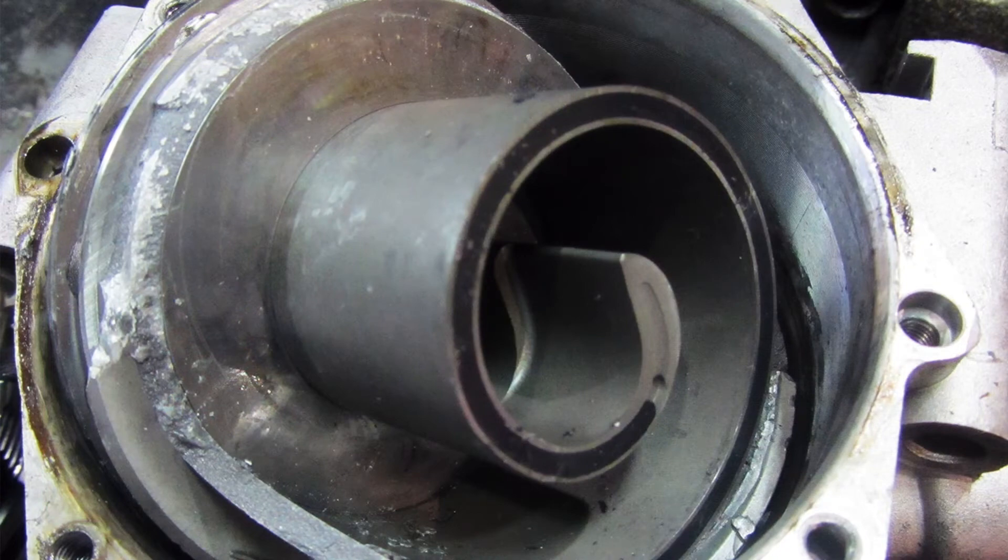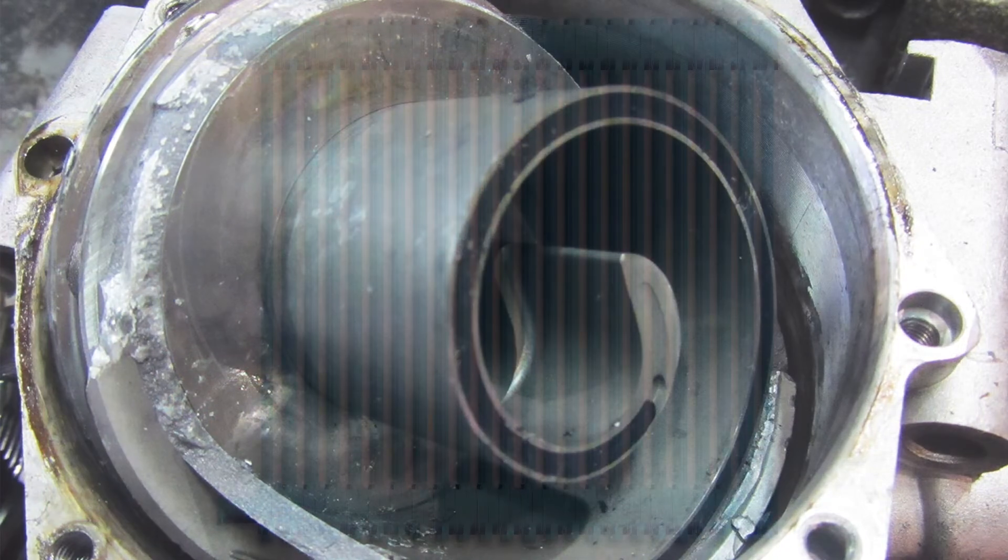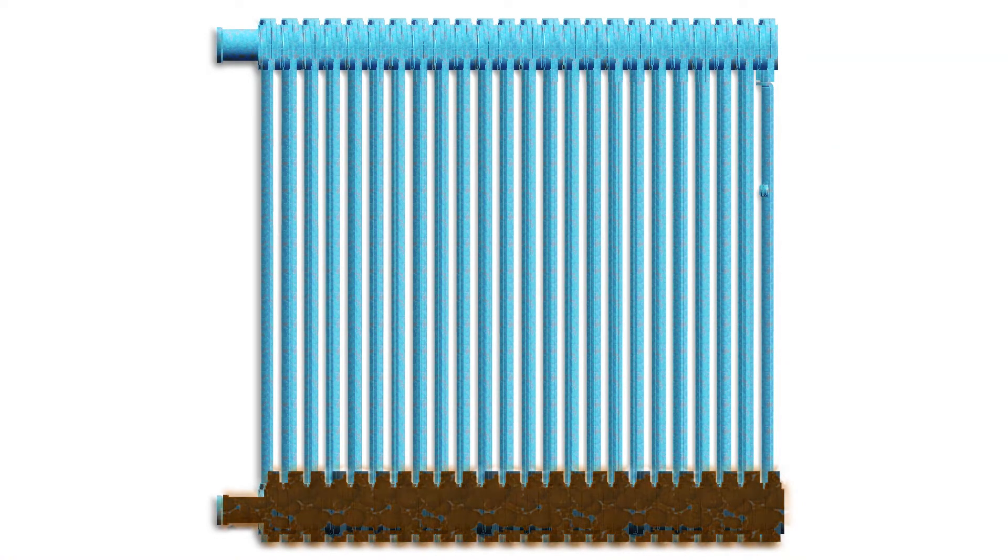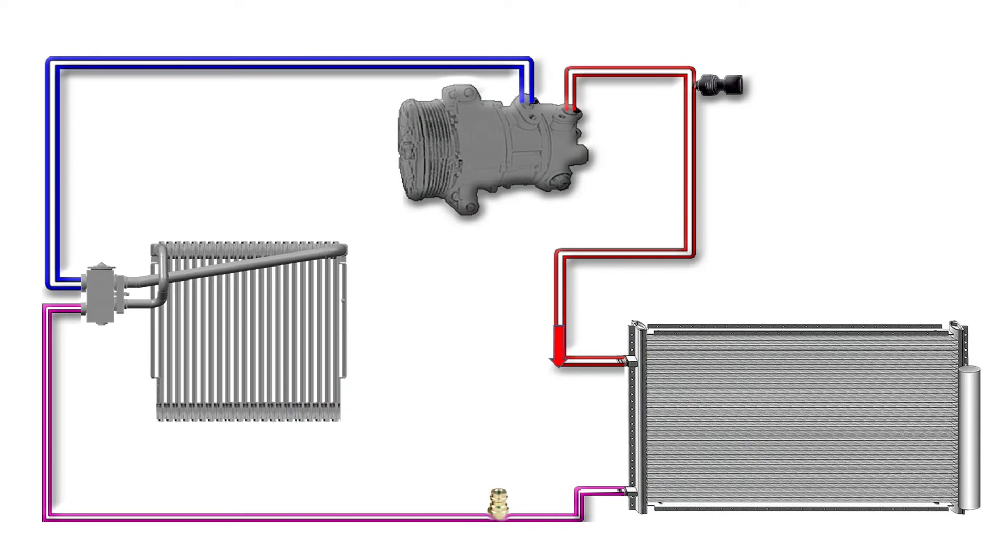This will cause the replacement compressor to fail rapidly. While the abrasive particulates will be especially concentrated in the oil at the bottom of the evaporator, they will also be distributed throughout the system. That is why any other components in the refrigerant circuit that are not being replaced must also be flushed.